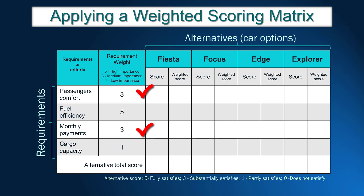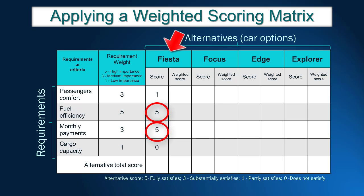In the following step, we need to evaluate each alternative on each requirement. Let's start with Ford Fiesta. John thinks this car partially satisfies the comfort requirement, so Fiesta receives score 1. In terms of full efficiency and monthly payments, Fiesta receives the highest score — 5 — because it is the cheapest and has the best fuel efficiency. For cargo capacity, Fiesta does not satisfy the needs and received score 0.